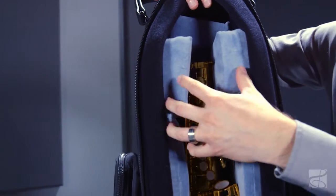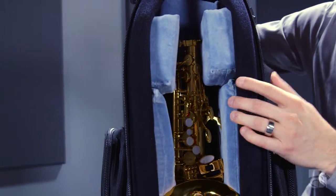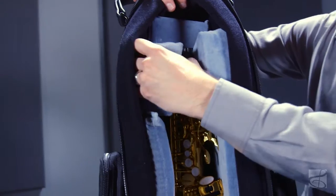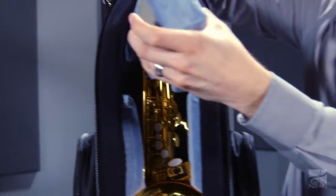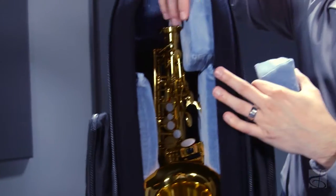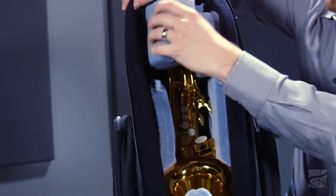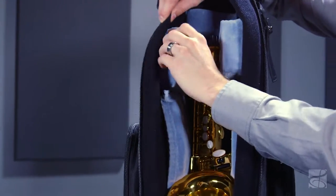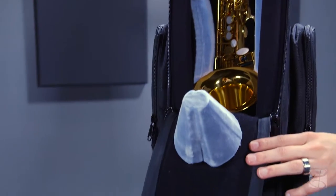Now as you can see inside, all the wheelie bags do feature these adjustable velcro foam pads. So depending on which model saxophone you have, you can actually adjust these foam pads to fit yours specifically.